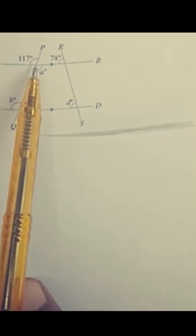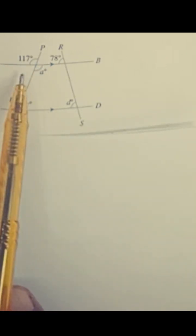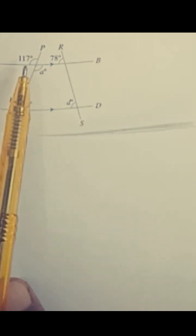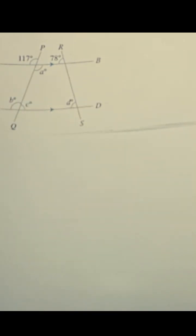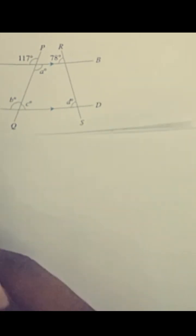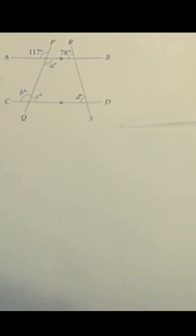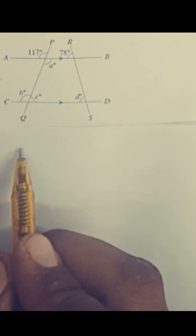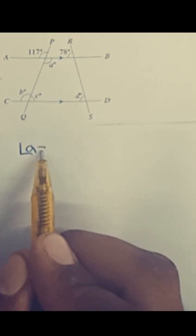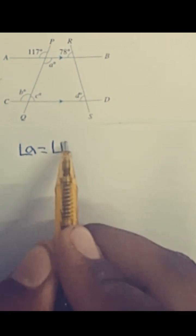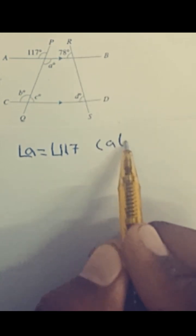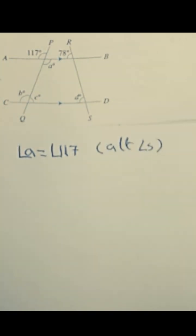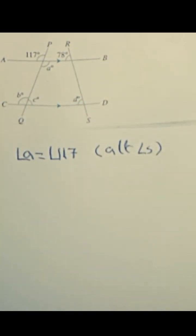At this point there are four angles: 1, 2, 3, and 4. If we count in sequence, 1 and 3 are alternate angles, which are also known as vertically opposite angles. According to this property, vertically opposite angles are equal, so angle a is equal to 117° because these are alternate angles.